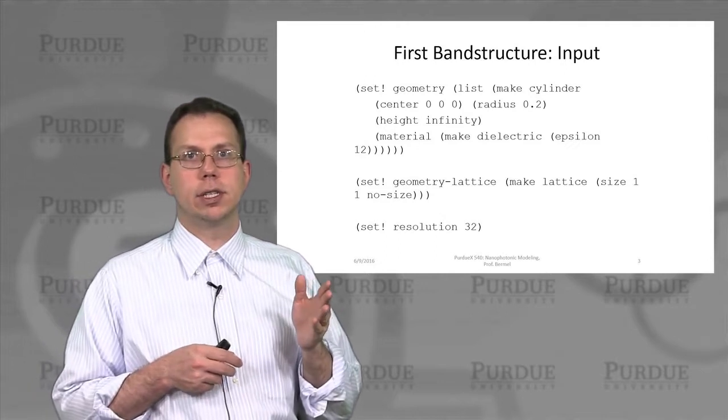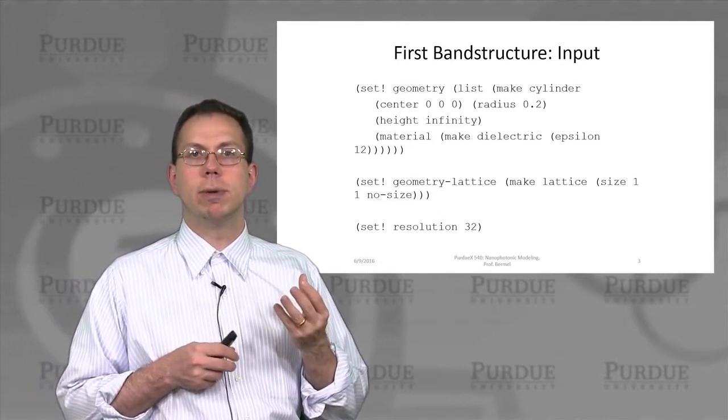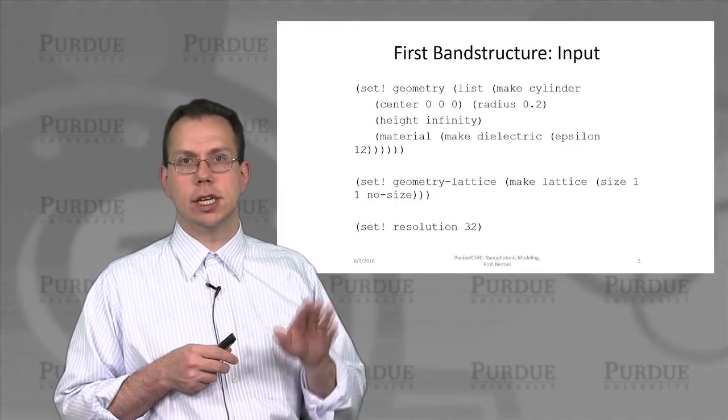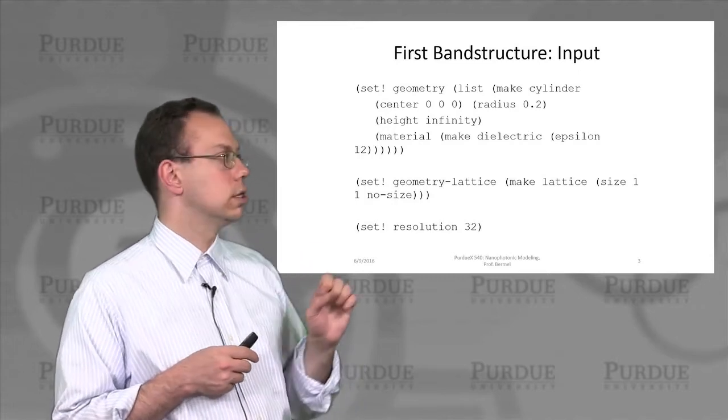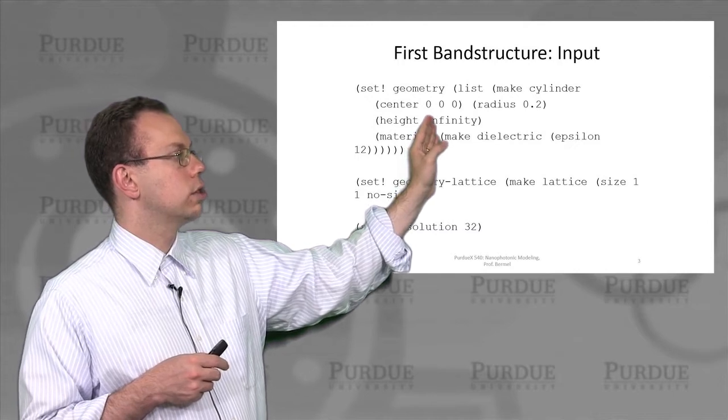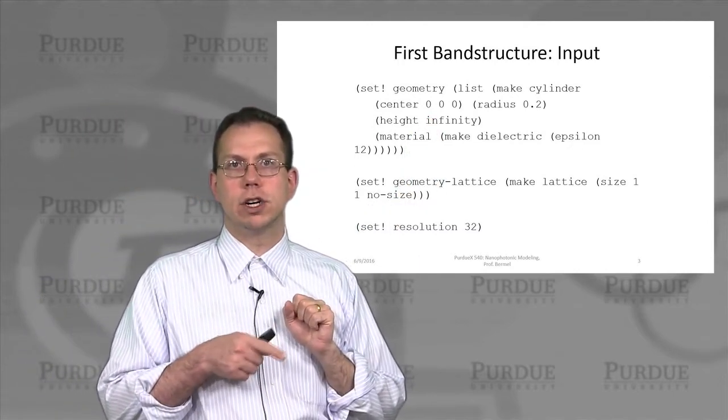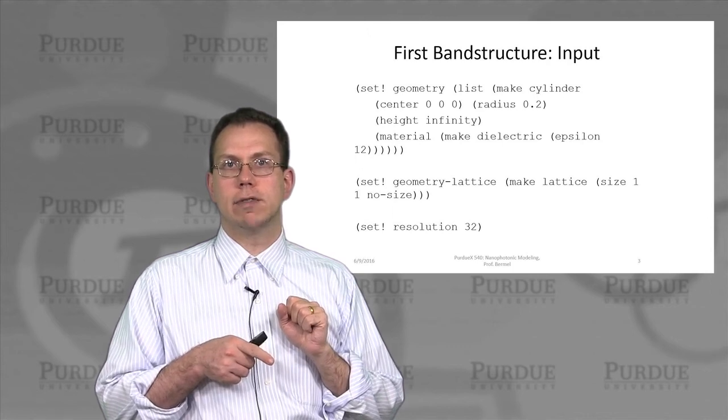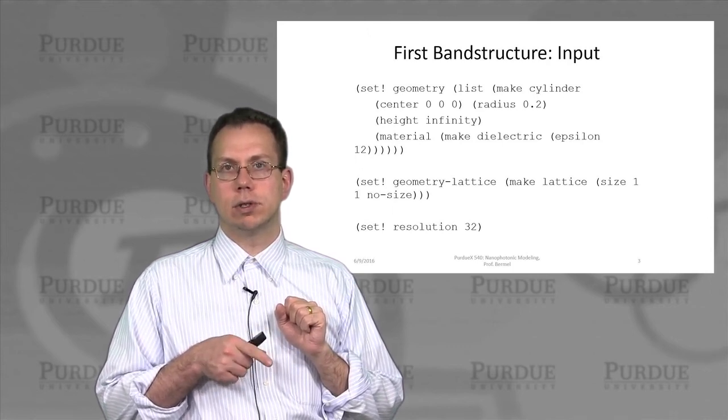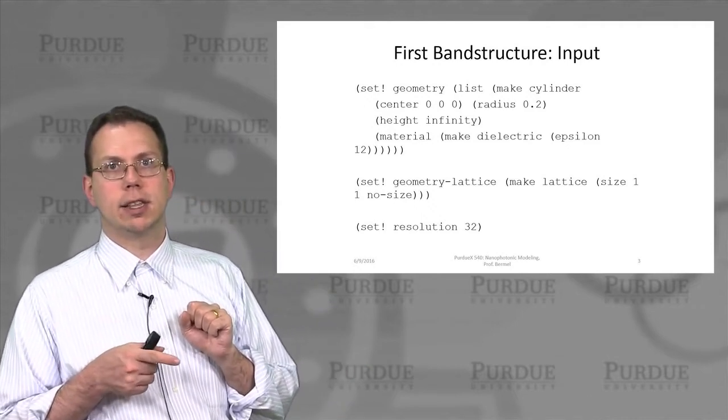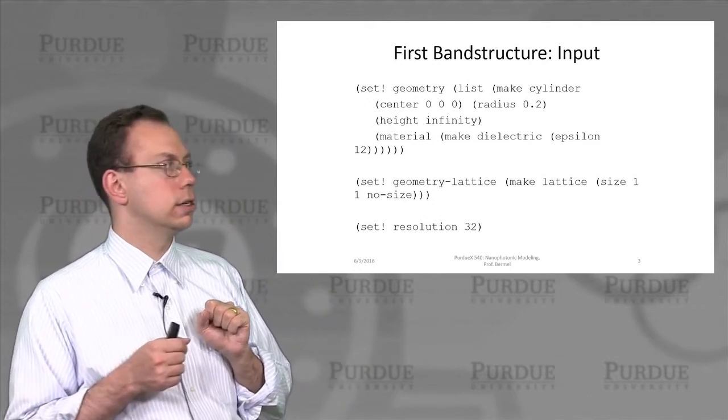We say that the size in the z direction is no size because it's only a 2D calculation. That forces MPB to be aware that we should have a mirror plane symmetry in the z direction. In the lateral direction, we just want to define a single material that has a refractive index or epsilon that's not equal to 1. This is going to be a cylinder made out of a high dielectric, say silicon or something.